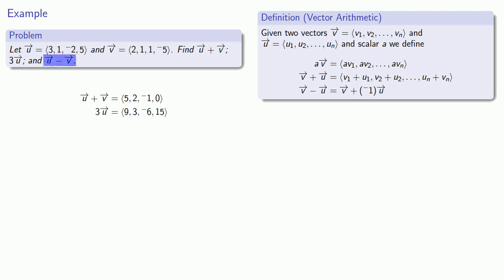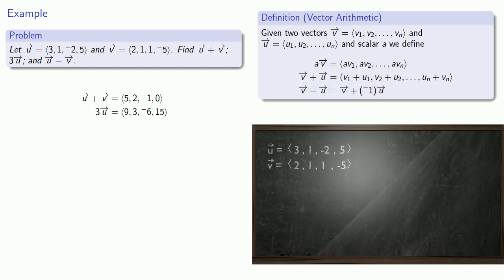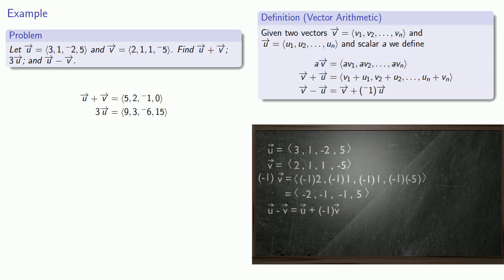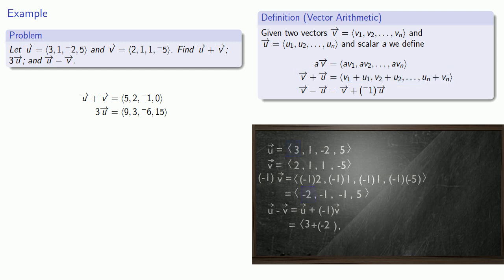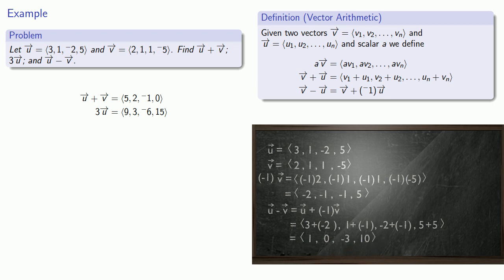Finally, for u minus v — by definition, the difference between two vectors is the first vector plus negative 1 times the second vector. So u minus v equals u plus negative 1 times v. Finding negative 1 times v gives us the vector with every component of v multiplied by negative 1: (−2, −1, −1, 5). Now adding component-wise — the components of u with the corresponding components of negative v — gives us our final vector u minus v equal to (1, 0, −3, 10).